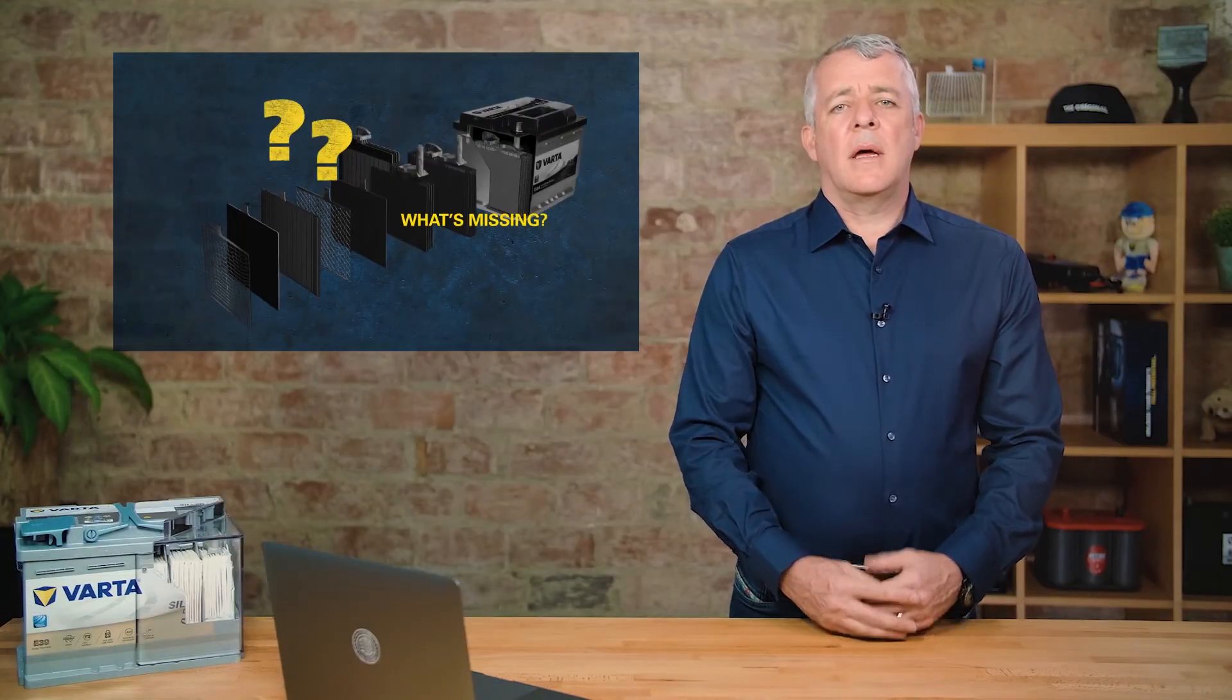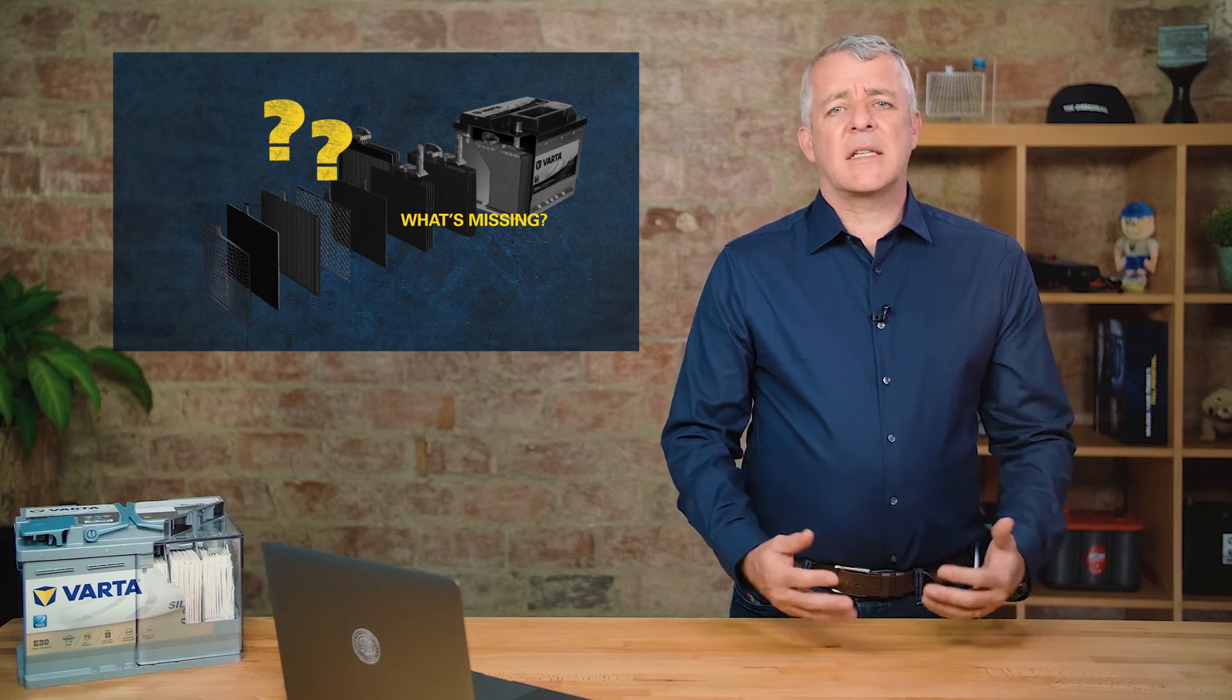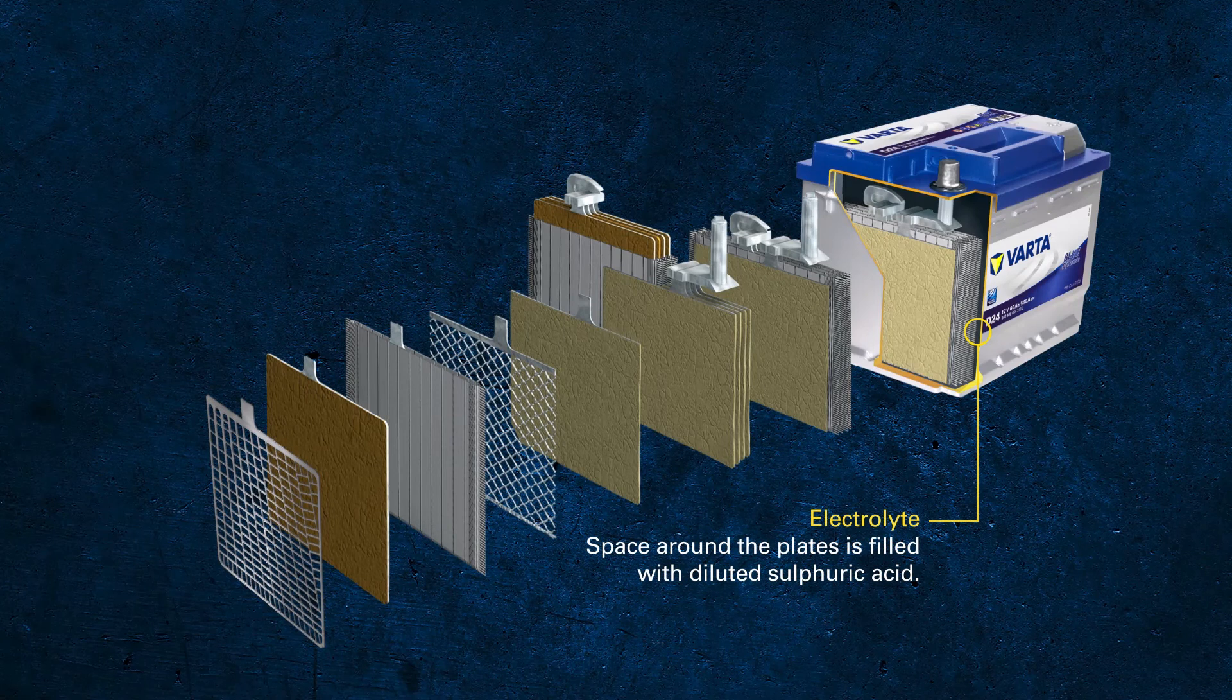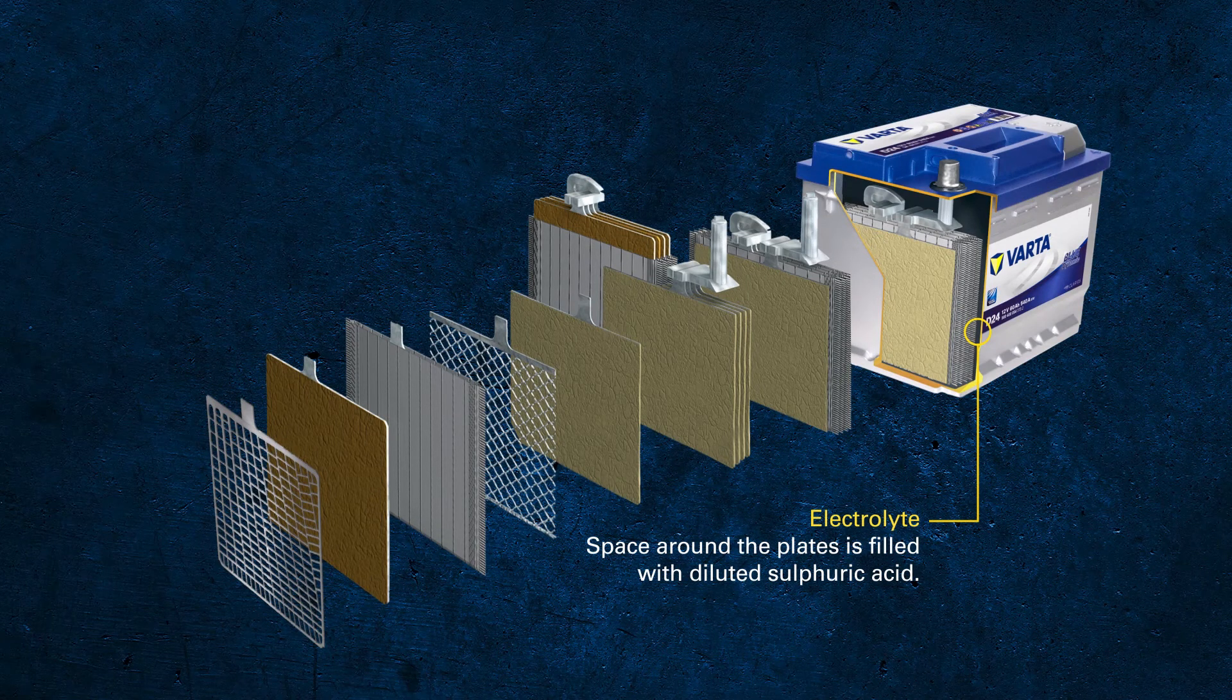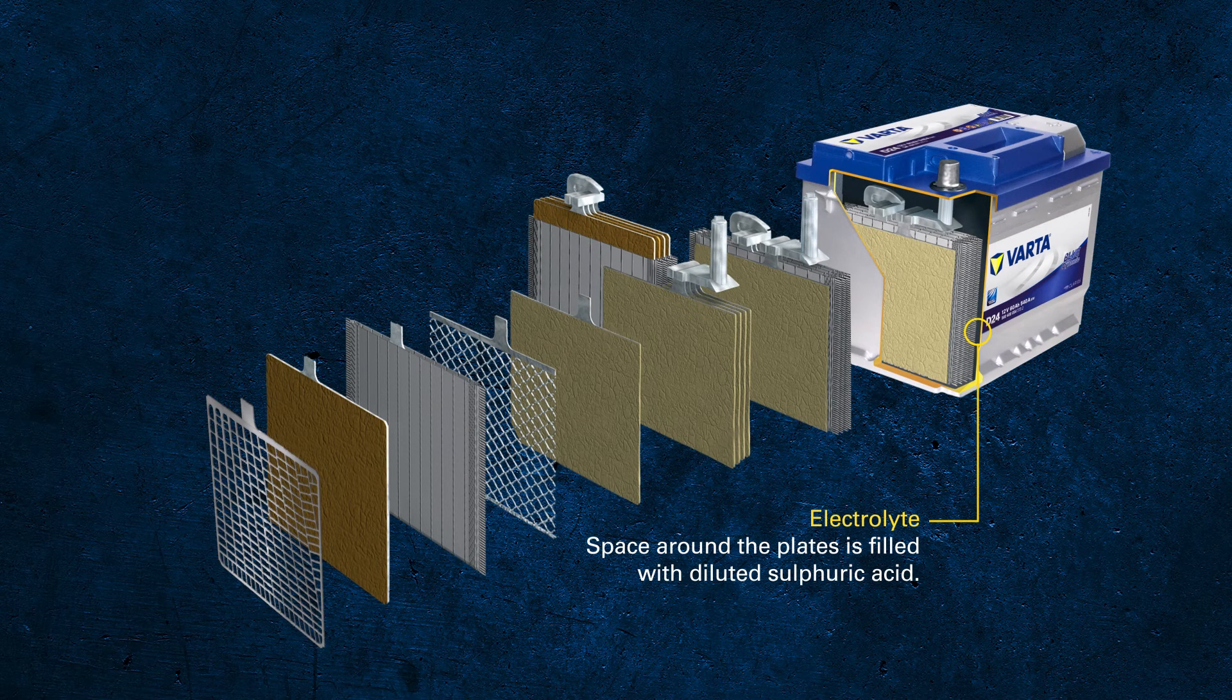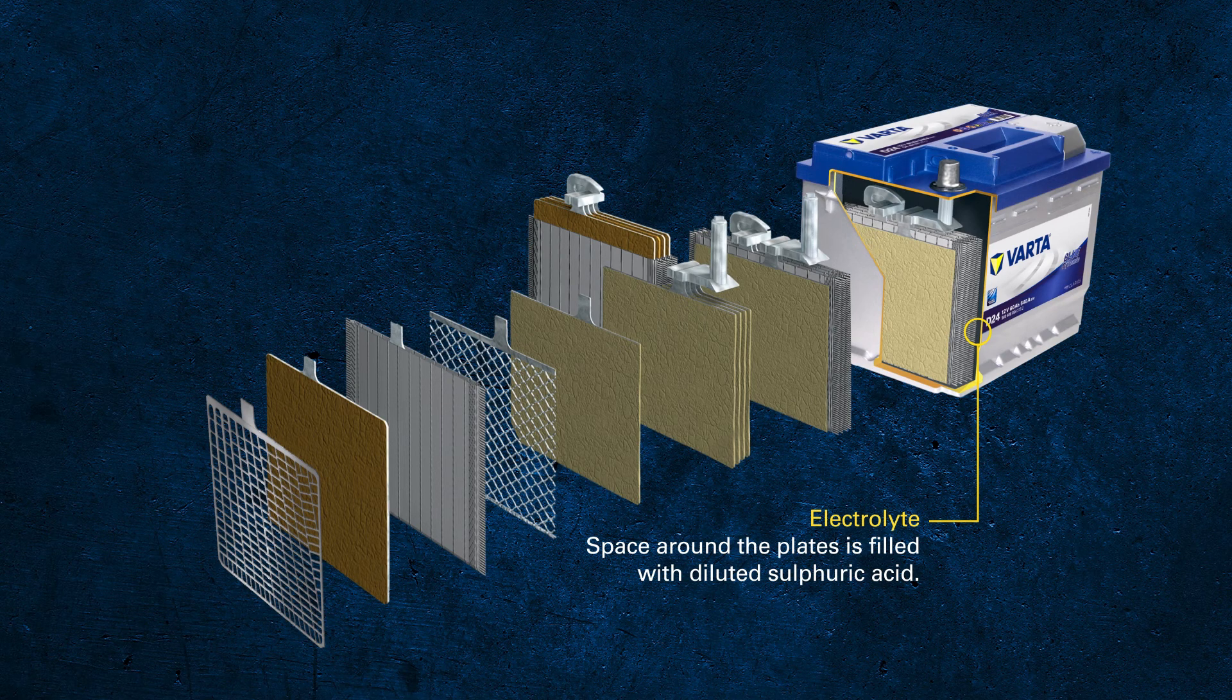So what's missing? As we're talking about lead-acid batteries, we've looked at the grids and the active mass which are made of lead, but where's the acid? The space around each plate in each cell is filled up with liquid electrolyte made from dilute sulfuric acid. The lead-acid battery is the only battery where the electrolyte takes part in a chemical reaction.